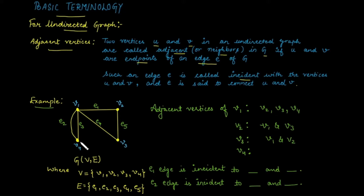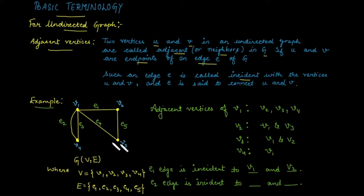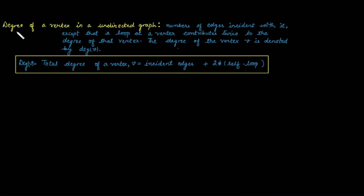For v3, it is connected with v1 and v2. For v4, it is adjacent to only vertex v1. Now in this case, edge e1 is incident to vertices v1 and v2, whereas edge e2 is incident with v1 and v2.